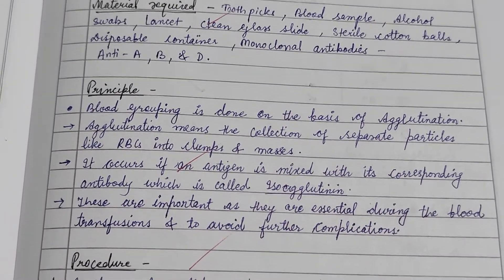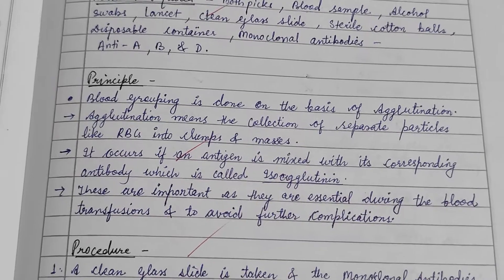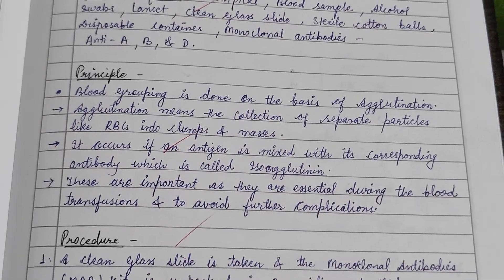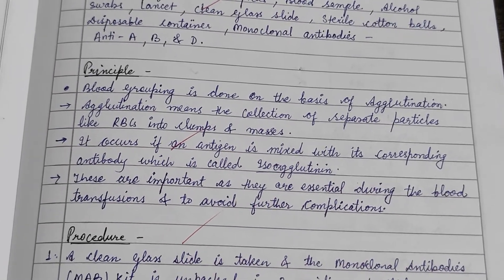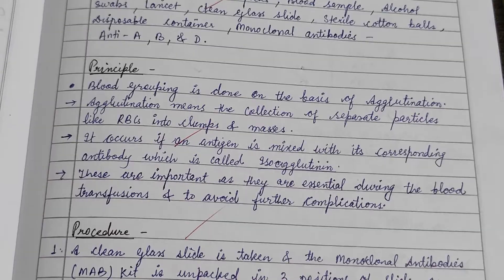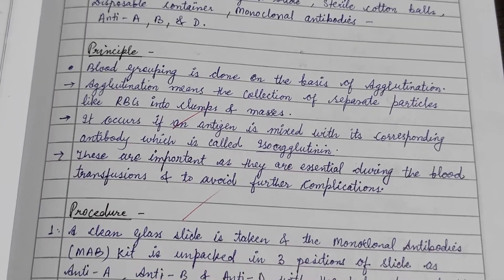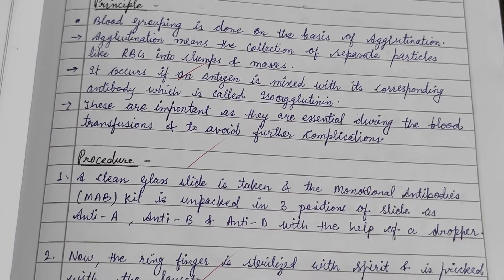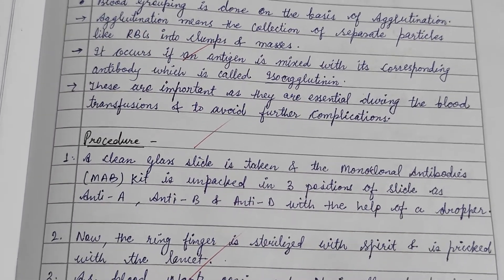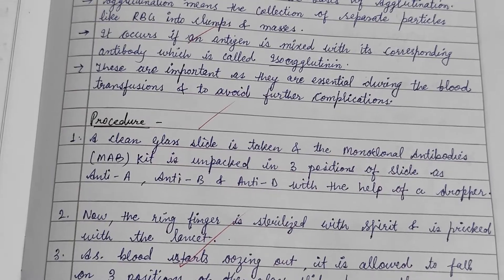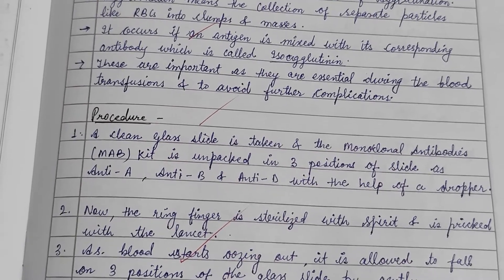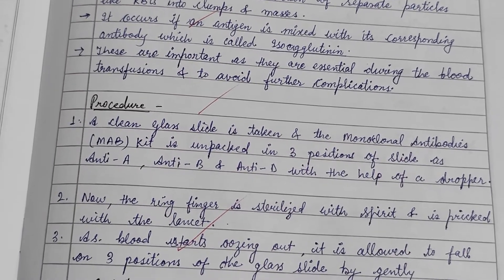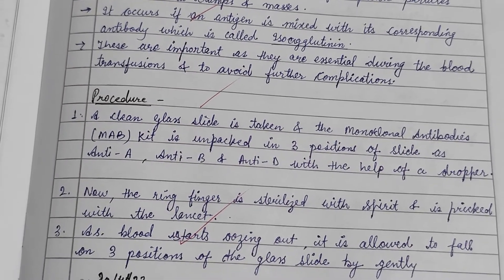The principle: agglutination means the collection or clumping of the RBC into a cell. If an antigen is mixed with its corresponding antibody, also called isoagglutinin, they are essential during blood transfusion to avoid further complications.